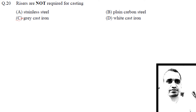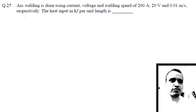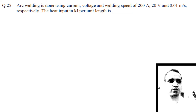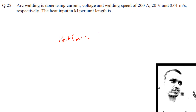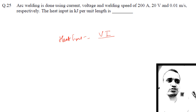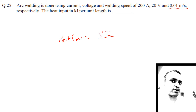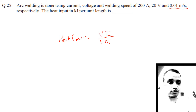Next: arc welding is done using a current of 200 amperes, voltage of 20 volts, and welding speed of 0.01 meters per second. The heat input in kilojoules per unit length is to be found. The heat input formula is V × I / speed, where V × I gives the power in joules per second, and dividing by velocity gives energy per unit length.